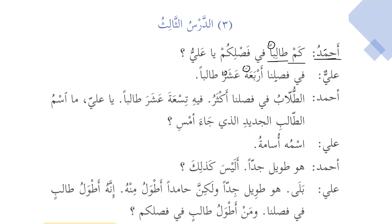We also know that this is basically a murakab, and murakab means it's compound. The first part of the number is opposite to the ma'dud. For example, if the ma'dud is masculine, then the first part of the number will be feminine. So fi faslina arba'ata 'ashara taaliban — there are 14 students in our classroom.